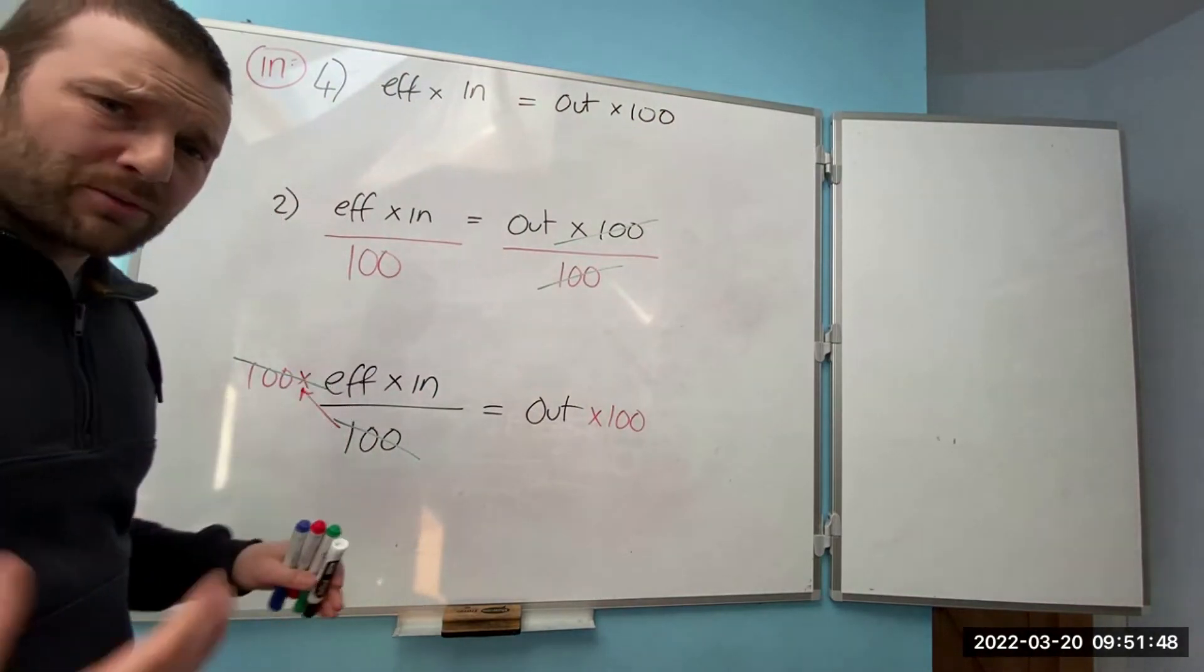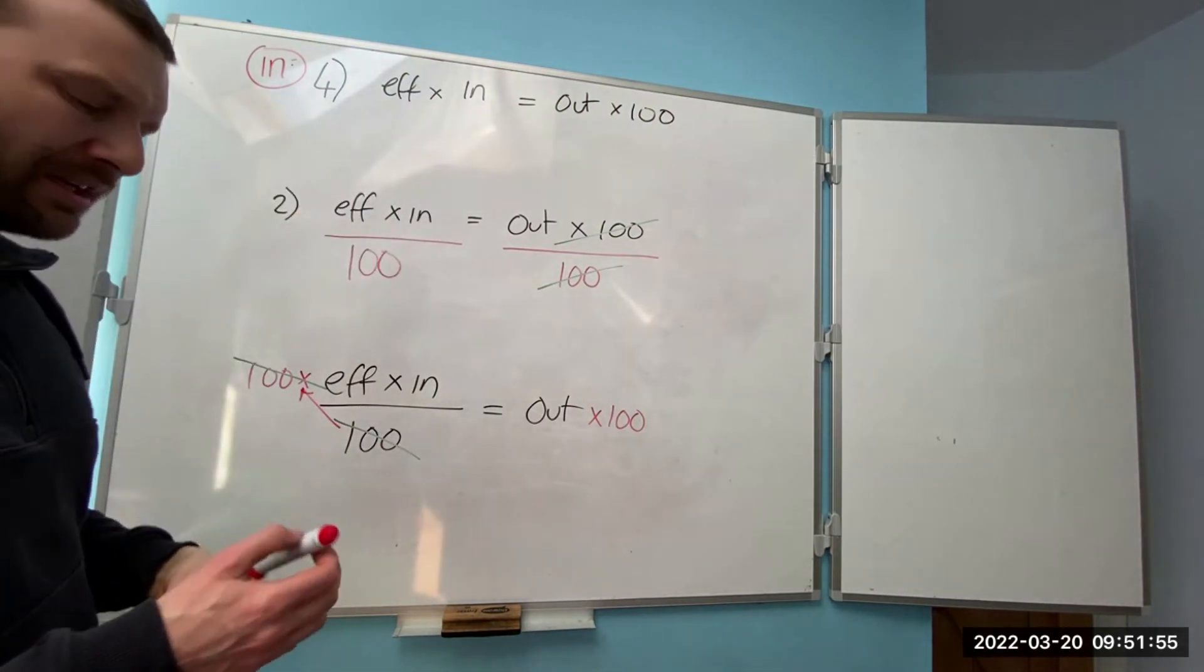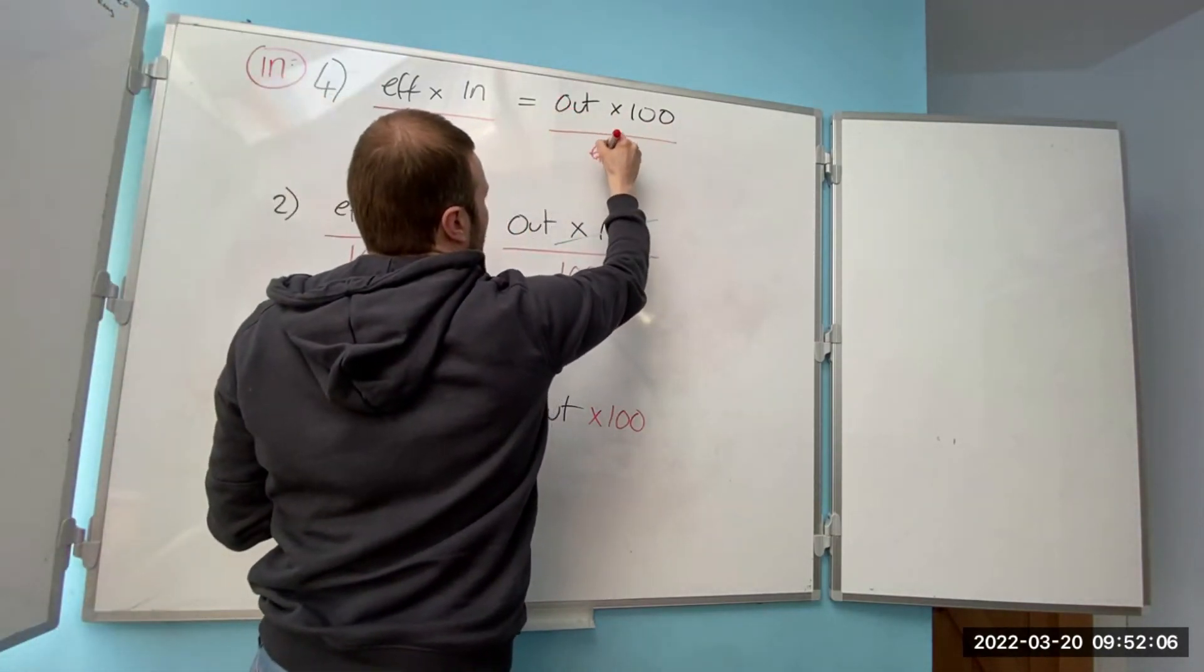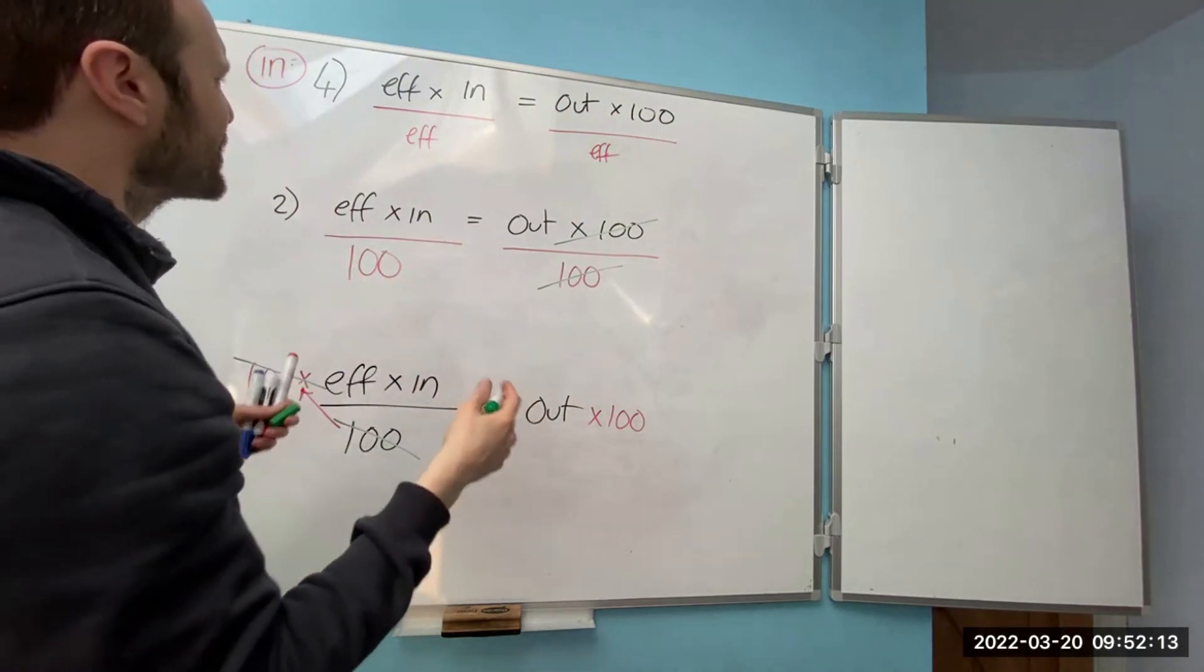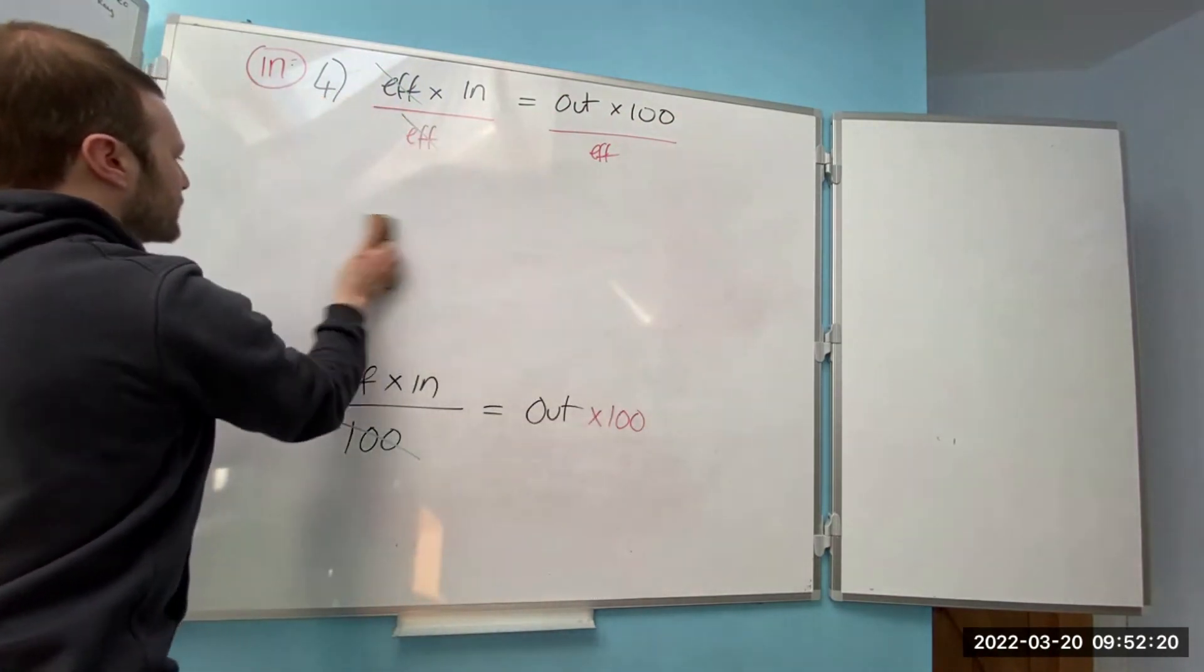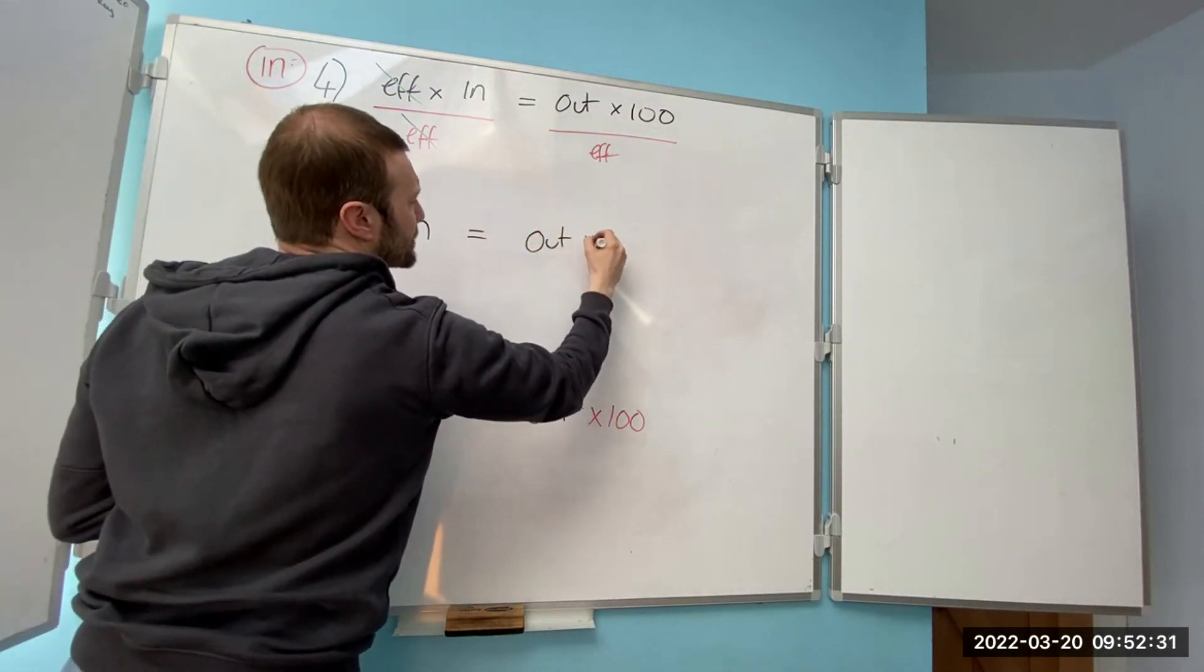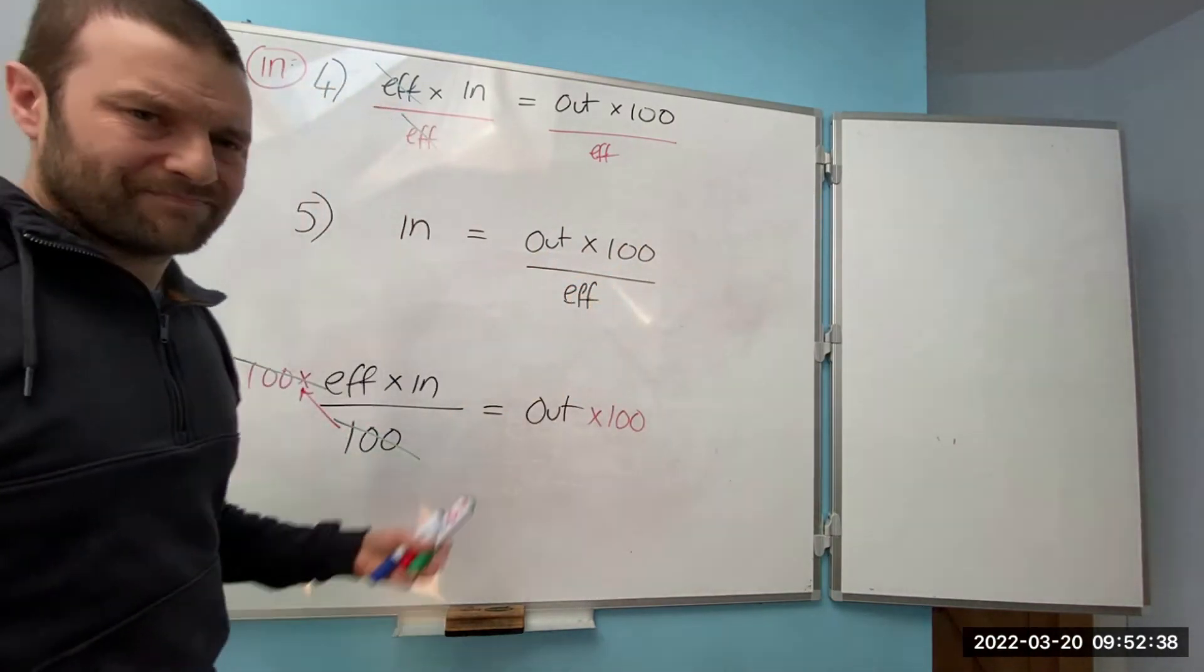Remind ourselves what we're looking for when we're looking for input. Input is attached to efficiency, so times efficiency, opposite of times is divide. So divide the efficiency away. Whenever I do that side, I have to do this side. Then I can clean that formula up. Step five, we've got input equals output times 100 divided by efficiency. Simple as that.